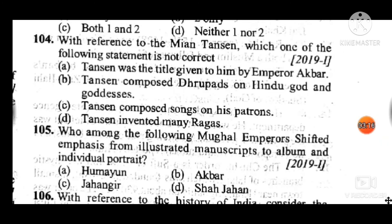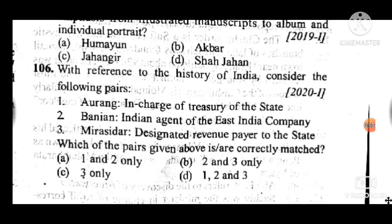Question 105: Who among the following Mughal emperors shifted emphasis from illustrated manuscripts to albums and individual portraits? Answer to question 105 is C: Jahangir. Question 106, the last question of medieval India asked in 2020: With reference to the history of India, consider the following pairs. Answer to question 106 is B: statements 2 and 3 are correct. With this question, we have completed medieval history questions asked in the preliminary examination from 1994 to 2020.